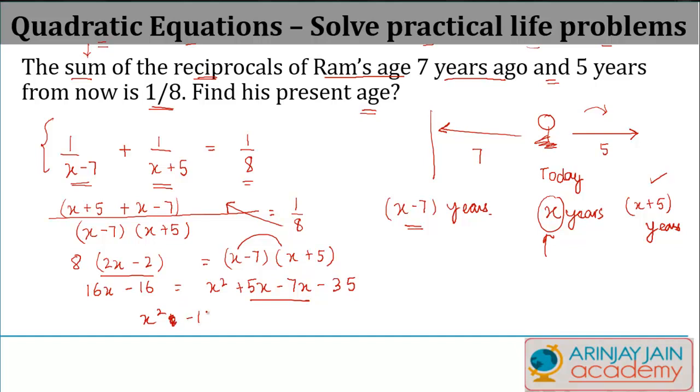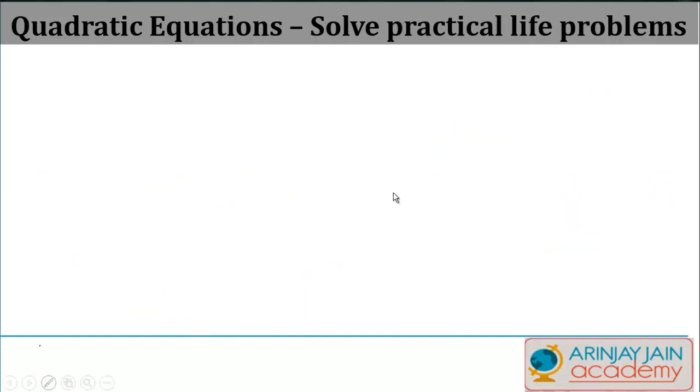You have minus 35 over here, this goes there it becomes plus, so minus 35 plus 16 gives you minus 19 is equal to 0. As this seems to be a simple one, what I will do is I'm just going to solve this by factorization method.